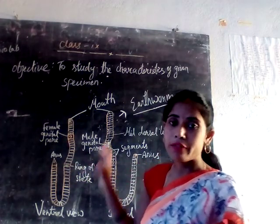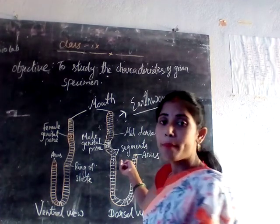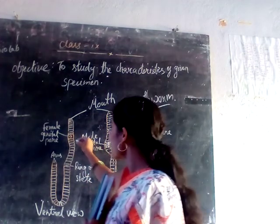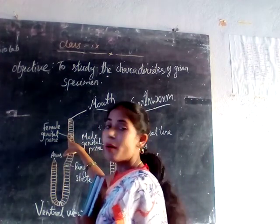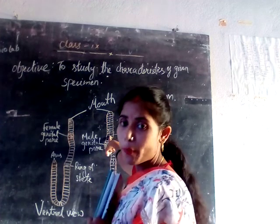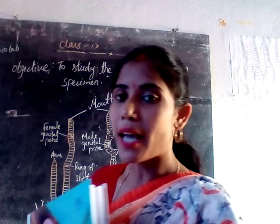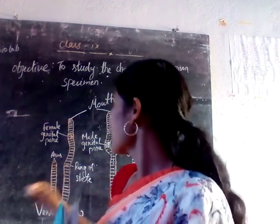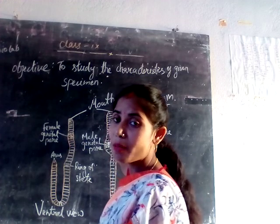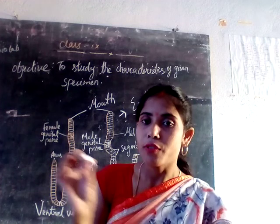Here we are identifying the female earthworm as well as the male earthworm. As you can see in the female earthworm, there is a small core which is present in the middle, and in the male earthworm the small core is not present. So the identification between the male and female earthworm is that a small genital core is present in the female earthworm, whereas in the male the genital core is absent — that is the main difference.